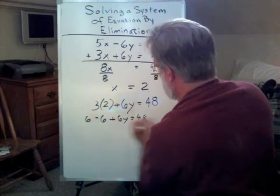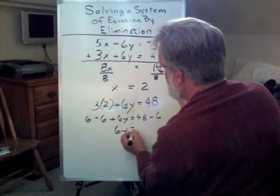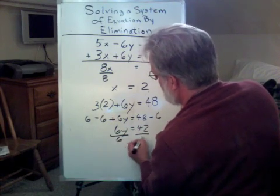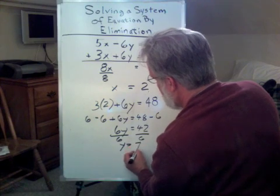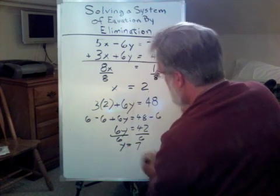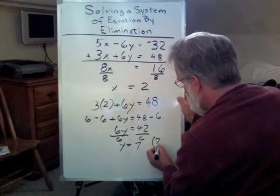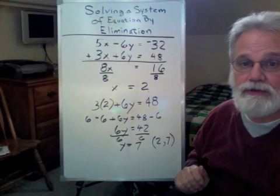I take 6 away from both sides, and I have 6y equals 42. Divide both sides by 6, and I have y equals 7. So, my answer is the coordinate pair (2, 7). And that's all there is to that.